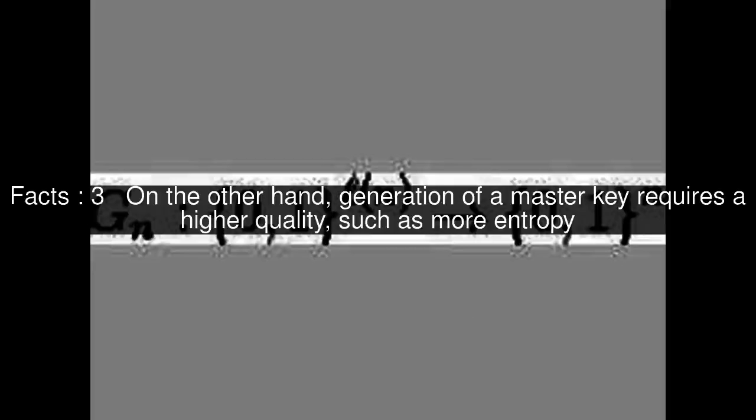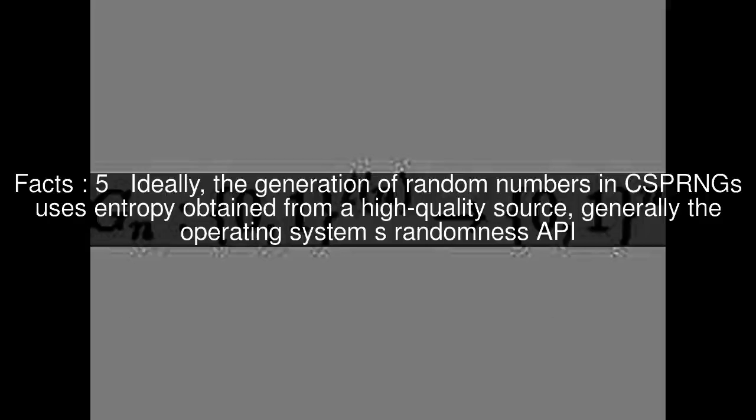The quality of the randomness required for these applications varies. On the other hand, generation of a master key requires a higher quality, such as more entropy. And in the case of one-time pads, the information-theoretic guarantee of perfect secrecy only holds if the key material comes from a true random source with high entropy.